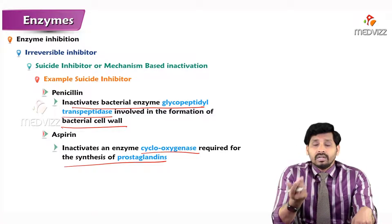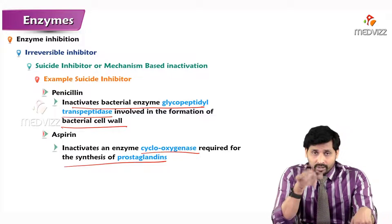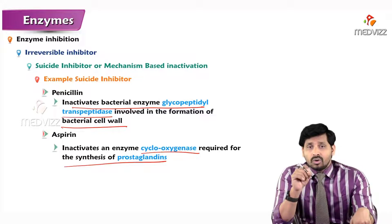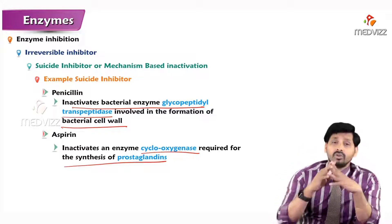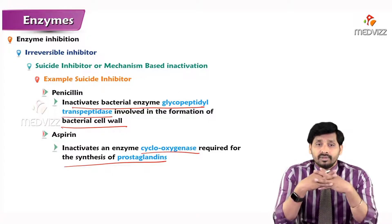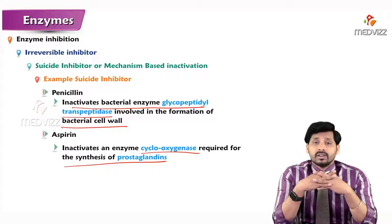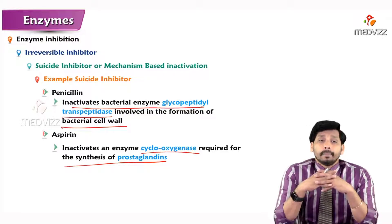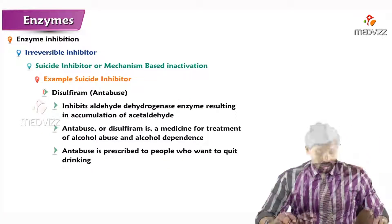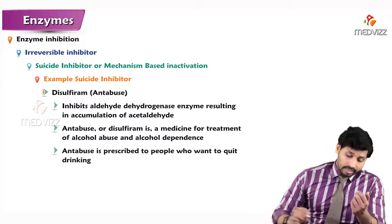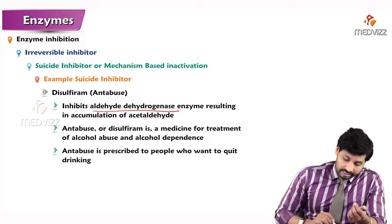Aspirin inactivates the enzyme cyclooxygenase, which is required for the synthesis of prostaglandins. Prostaglandins are responsible for pain during fever. When we take aspirin, it inhibits cyclooxygenase, there is no release of prostaglandins, and we are relieved from body pains. Aspirin is therefore an anti-inflammatory suicide inhibitor.